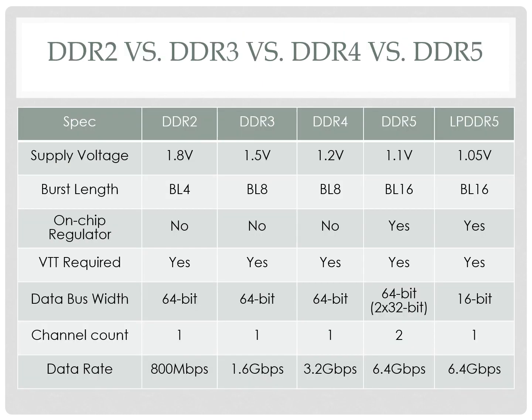Let us look at the differences between DDR2, DDR3, DDR4, and DDR5. Regarding supply voltage: during DDR2 it was 1.8V, DDR3 is 1.5V, DDR4 dropped to 1.2V, DDR5 is 1.1V, and LPDDR5 operates at 1.5V. The burst length is one of the important factors in determining the speed of DDR.